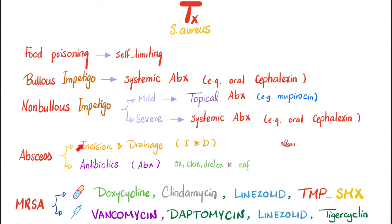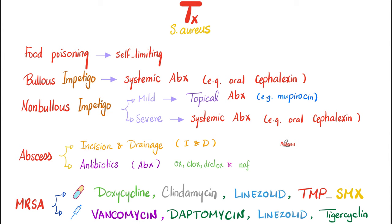Oral cephalexin. For abscesses: incision and drainage. Antibiotics include oxacillin, cloxacillin, dicloxacillin, and nafcillin — because these are anti-staph. What if the Staph aureus is MRSA? Doxycycline, clindamycin, linezolid, and TMP-SMX are available orally. Or if it's severe: vancomycin, daptomycin, linezolid, or tigecycline — available intravenously.